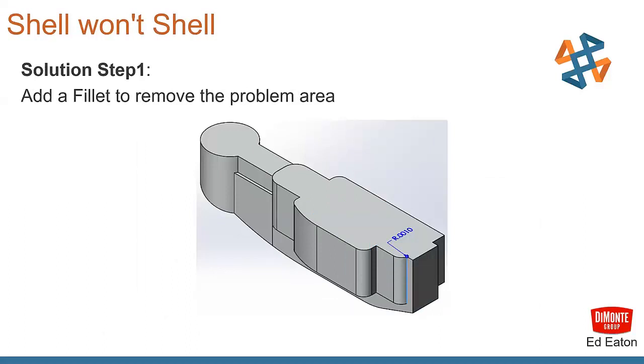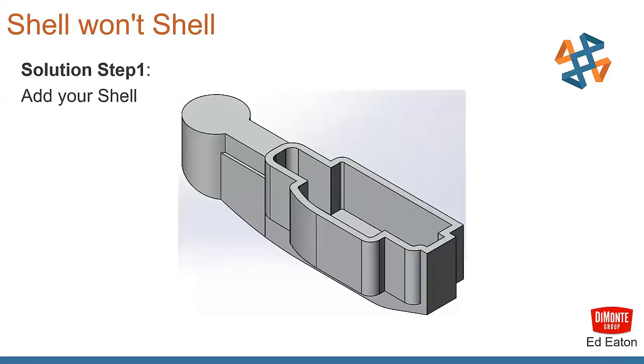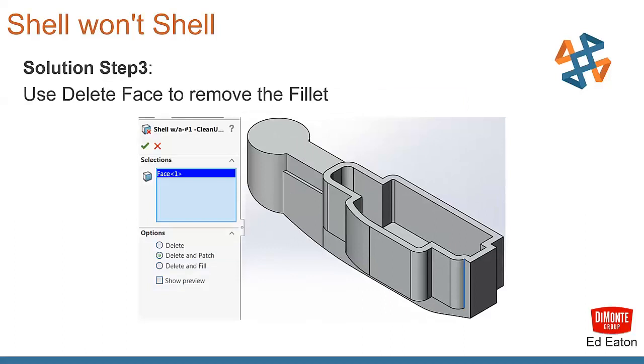What we do, we add a fillet to remove the problem area. And you can see the radius that we put in here, it's small, 0.001, really a very small value that's in there. We then add our shell. We can see that that value carries over onto the inside of the wall thickness there.